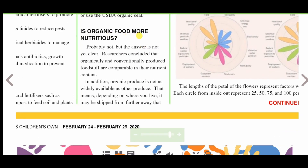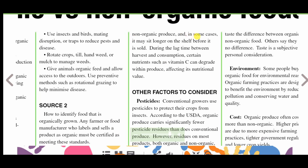Is organic food more nutritious? Probably not, but the answer is not yet clear. Researchers concluded that organically and conventionally produced foodstuffs are comparable in their nutrient content. In addition, organic produce is not as widely available as other produce, meaning it may be shipped from farther away than non-organic produce. In some cases it may sit longer on the shelf before it is sold, and during the lag time between harvest and consumption, certain nutrients such as vitamin C can degrade, affecting nutritional value.